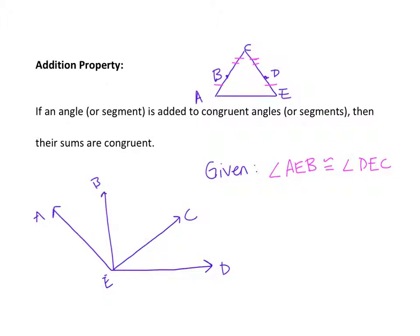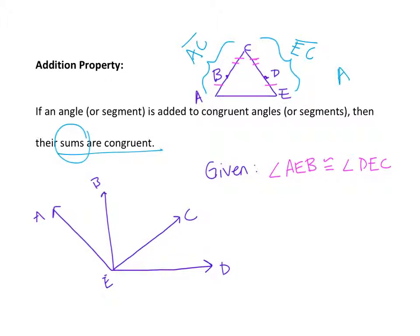The conclusion we can make has to do with the sums. In this triangle, if we add AB plus BC — this entire segment, adding this small one to this slightly bigger one — we get AC. On the other side of the triangle, if we add DE to DC, we get EC. Because these smaller pieces are congruent, that tells us the sums will be congruent. So AC is congruent to EC.